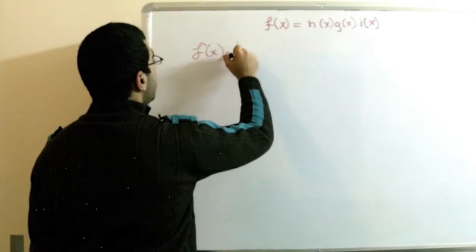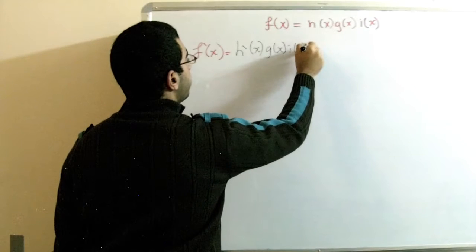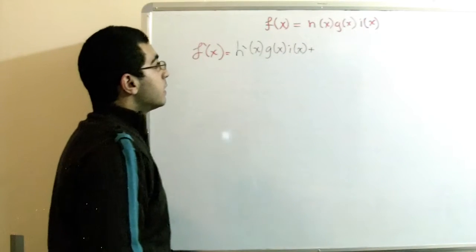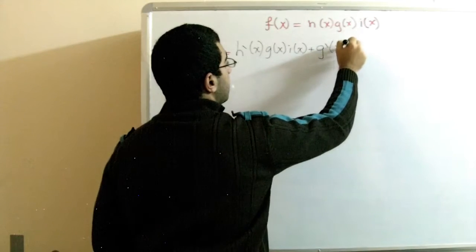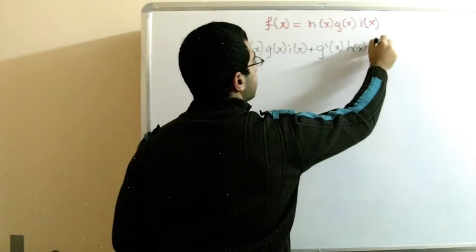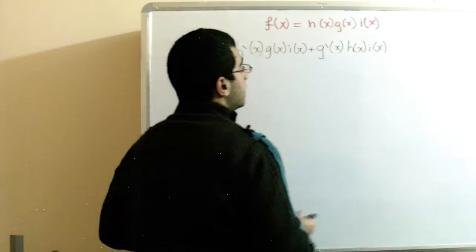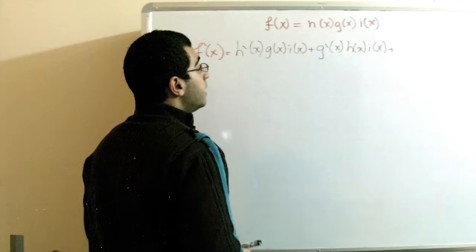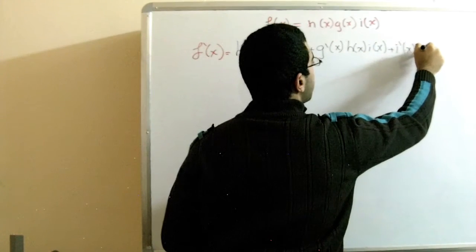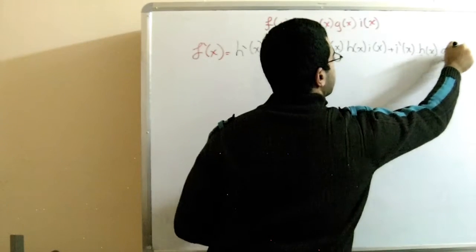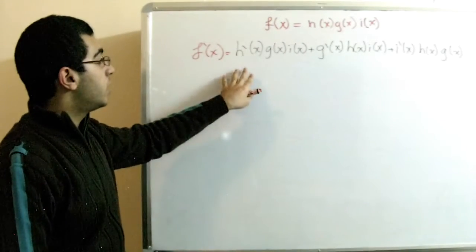So for three functions, we put h'(x) and leave the rest — g(x)·i(x) — in normal form. Then we take the derivative of the second one: g'(x) with h(x)·i(x) in normal form. Then we add a plus and put the third in the derivative: i'(x) with h(x)·g(x) in normal form. So it's that simple — put one in the derivative and leave the rest as normal.